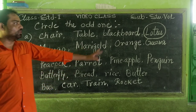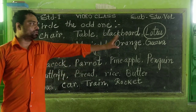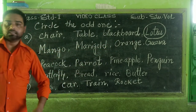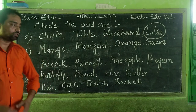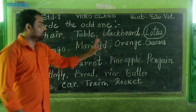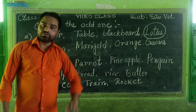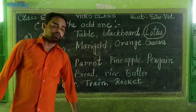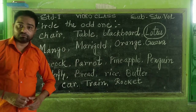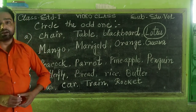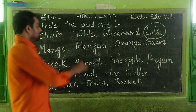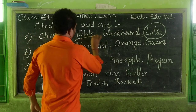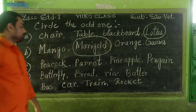Next: mango, marigold, orange, guava. Mango is a fruit. Orange is a fruit. Guava is a fruit. But marigold is not a fruit — it is a flower. So the odd one out: Satyala Orba is marigold.